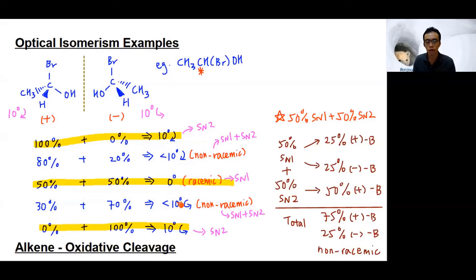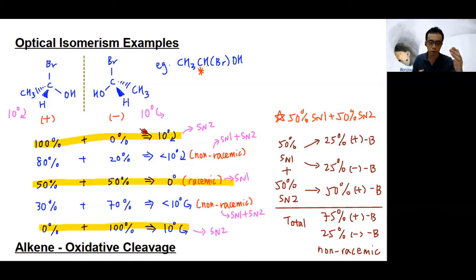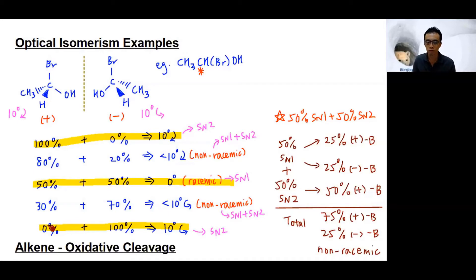This becomes an entire spectrum — from 100% plus/0% minus, gradually decreasing the plus isomer percentage and increasing the minus, all the way to 100% minus isomer. This completes the concept of optical isomerism. Applying this to SN1 and SN2 mechanisms: one mechanism gives an optically pure sample, the other gives a racemic mixture, and under certain circumstances we can also get a non-racemic mixture.